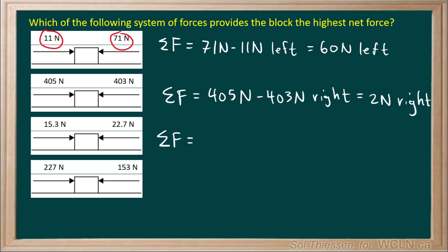In the next case we have 22.7 newtons to the left and only 15.3 newtons to the right. So the net force will be to the left, 22.7 minus 15.3 is equal to 7.4 newtons to the left.